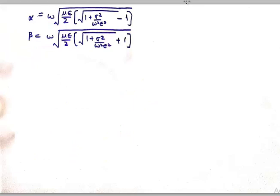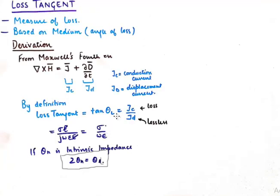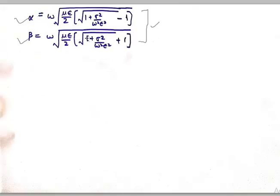Now we will talk about the physical significance of the loss tangent. We know that the propagation constant in wave equation gives us attenuation constant alpha and phase constant beta. These two parameters are very important to understand the properties of a wave. You can see in these formulas we see sigma upon omega epsilon squared. And our loss tangent is sigma upon omega epsilon. This loss tangent is featuring in alpha and beta.